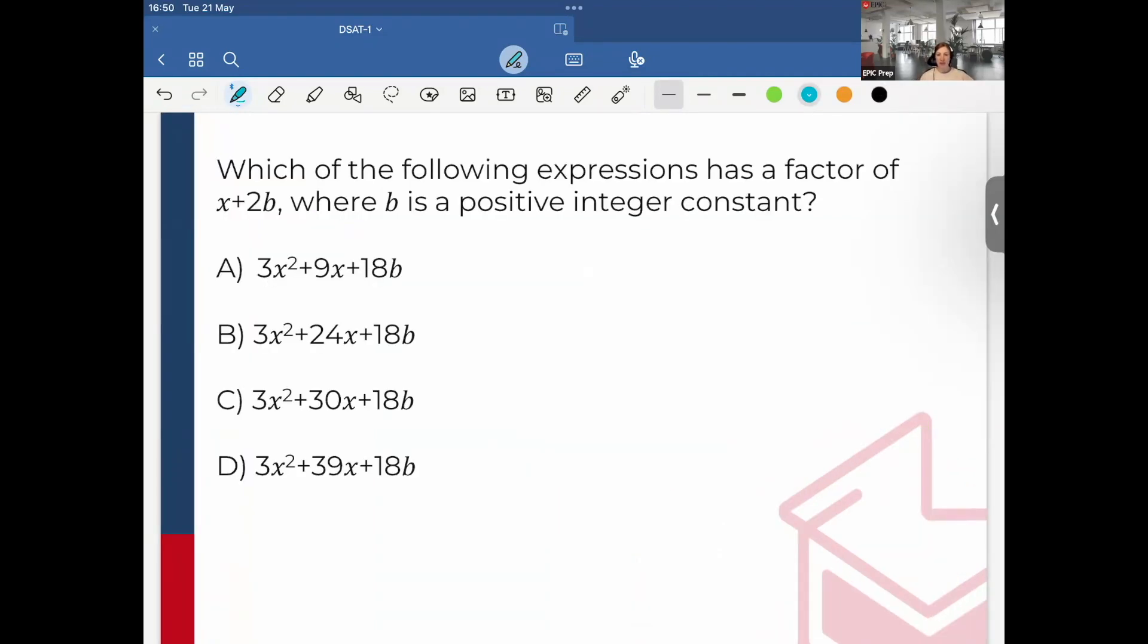Which of the following expressions has a factor of x + 2b, where b is a positive integer constant? This one's a little bit more complex because now I have x and another variable b. Let's see, I know that one of them is going to be x + 2b.